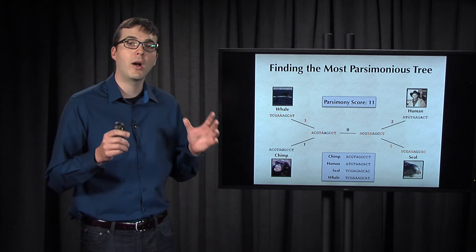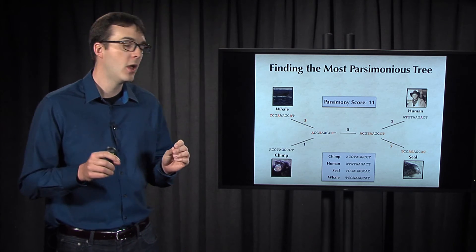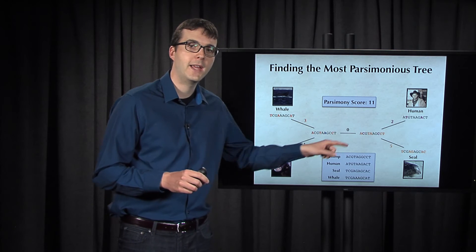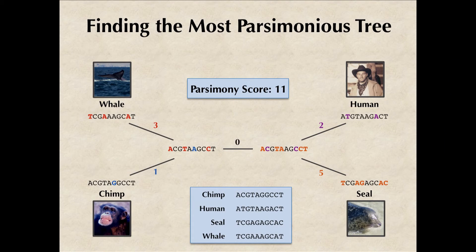Now I'll have you note that when applying our algorithm for small parsimony, we're going to allow an internal edge to have weight zero, as shown here. Because if we were to compress this edge, then we would no longer have a binary tree.